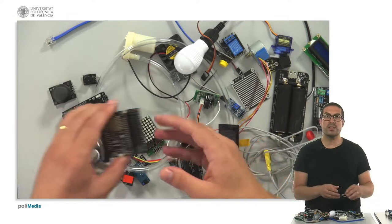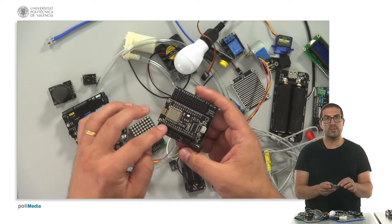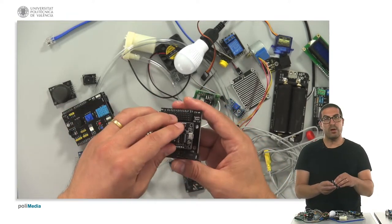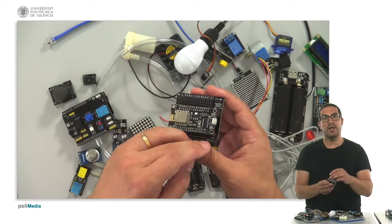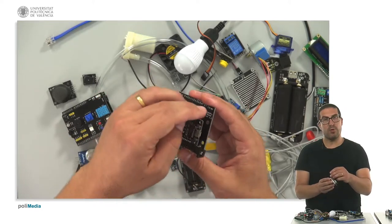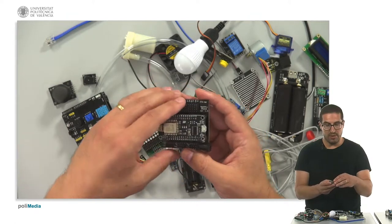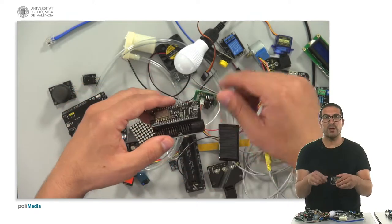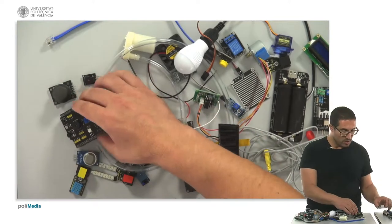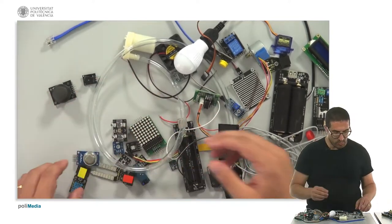And also, for instance, an alternative is to use the NodeMCU that I already explained, together with the shield, because it also provides with a lot of pins, with ground signals and all of that, power pins, so we can connect our modules to it.